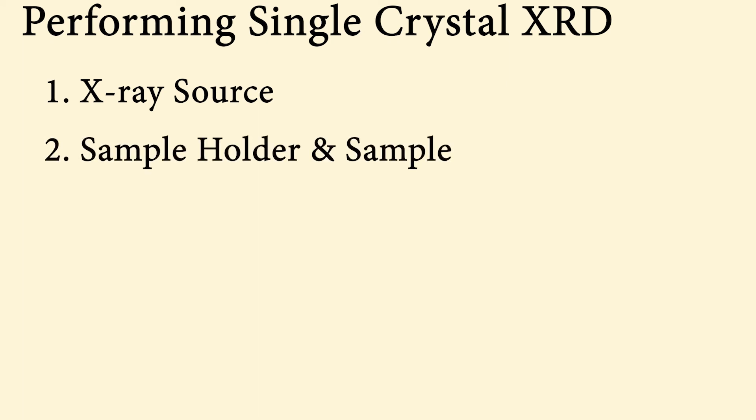Now we'll go over the basic procedure for performing a single crystal XRD experiment. The experimental setup consists of three basic elements: your producer of the X-rays, your sample holder and sample, as well as an X-ray detector.